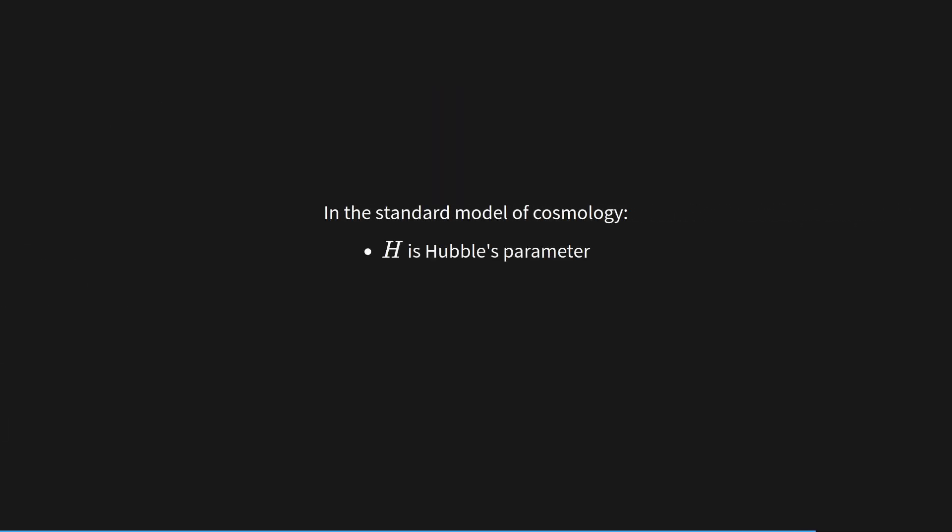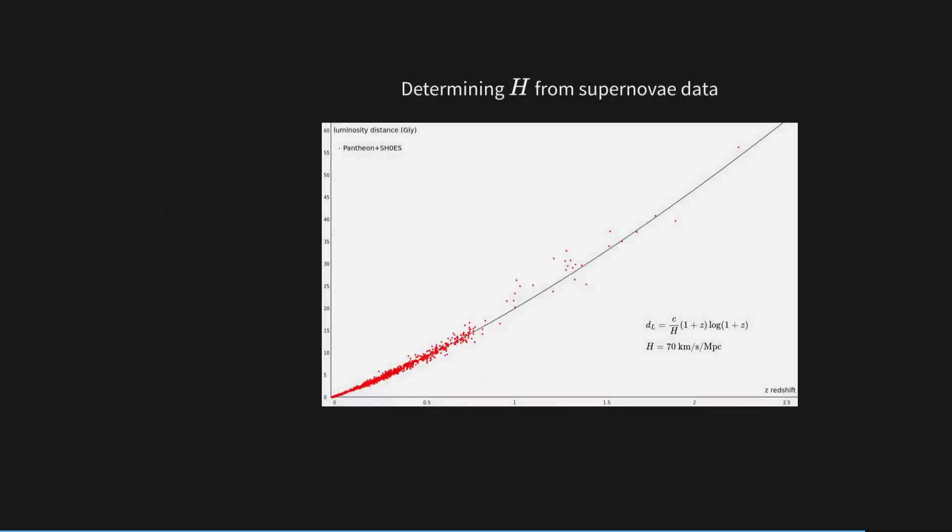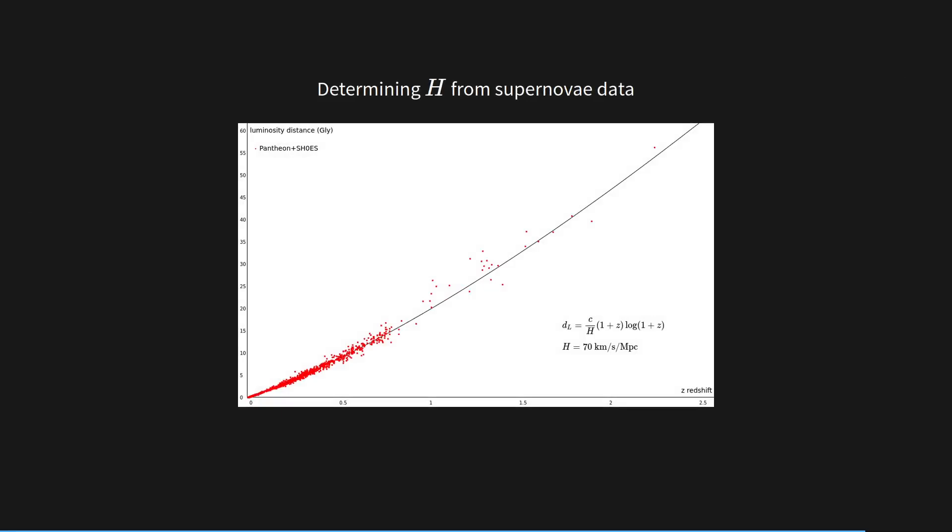So in the standard model of cosmology, H is Hubble's parameter, and H subscript 0 is Hubble's constant. You can check out episode 2 for more details about that. But I'm not talking about the standard model of cosmology here. H is Hubble's constant, and H is actually constant. H is not expansion rate. We can determine H from the supernova data. It's about 70 kilometers per second per megaparsec. There's no problem there.